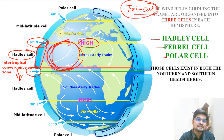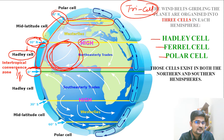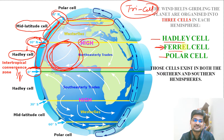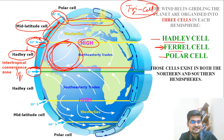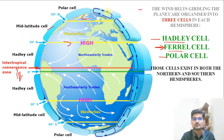The second cell is the mid-latitude cell, from the subtropical area at about 30 degrees to 60 degrees at the subpolar low pressure belt. This is the mid-latitude zone and the cell is called the Ferrel cell — named after a scientist. The third cell is the polar cell, with circulation from the subpolar low to the polar high. These three cells make up the tricellular model through which the atmosphere circulates, governing the entire wind pattern on earth including trade winds, westerlies, and polar easterlies.